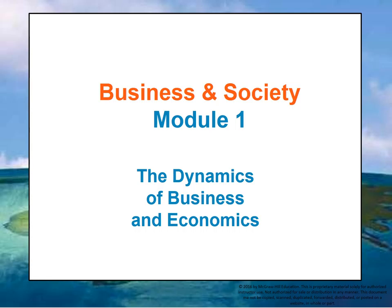The first module begins part one of this overview course. This first part of the course, called the Business Environment, consists of three modules intended to provide a big-picture overview of how the business and social environments work together to create the potential for prosperity. This very first module, the Dynamics of Business and Economics, presents the basics and is intended to let you see the big picture before we dive more deeply into all the parts of the business of a business.